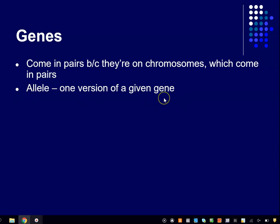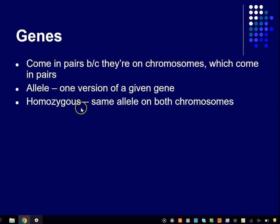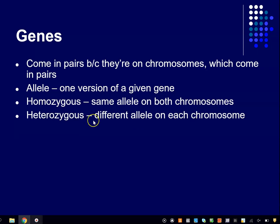The same thing applies to the genes that produce aspects of your brain and therefore your behavior. An allele is one version or one flavor of a given gene. We say that an individual is homozygous for a particular gene when they have the same allele on both chromosomes — homo means same. If you've got two different versions, then you're said to be heterozygous. There can be anywhere from just a few to a couple of dozen different versions of any given gene floating around in the general population.